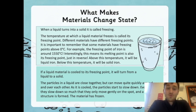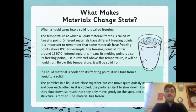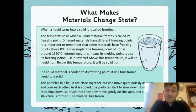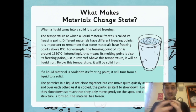If a liquid is cooled to its freezing point, it will turn from a liquid to a solid. The particles in a liquid are close together but can move quite quickly around and over each other. As it is cooled, the particles start to slow down. Eventually they slow down so much that they only move gently on the spot and a solid structure is formed — the material has frozen. So the cooler a liquid gets, the more it freezes, the more the particles stand still, vibrate, and get compacted together.